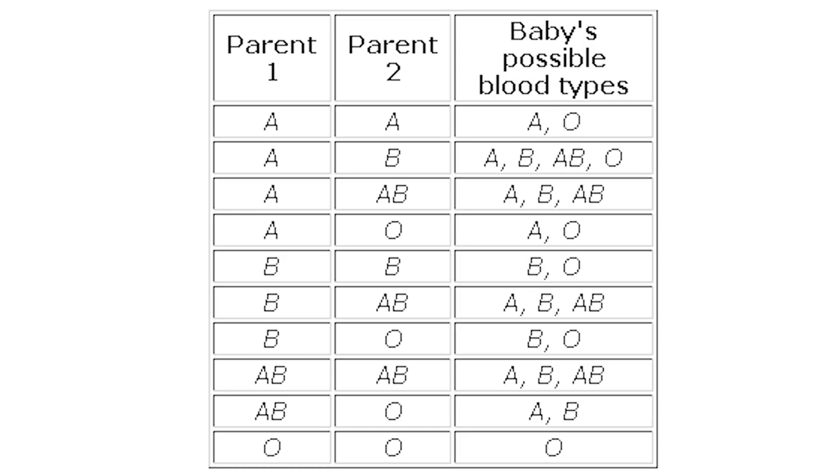What makes a blood type a blood type in the first place? Well, your blood type was passed down to you from your parents' genetics. For example, my blood type is O negative, my husband's blood type is B positive, and our daughter's resulting blood type ended up being O positive. Depending on what your parents' blood types are determines what your blood type is.